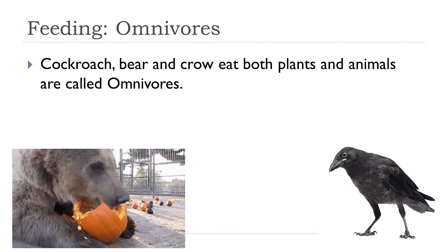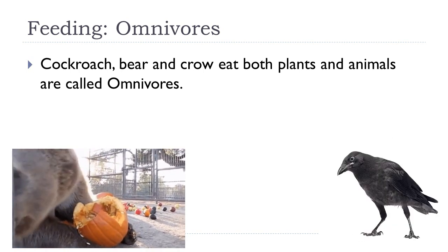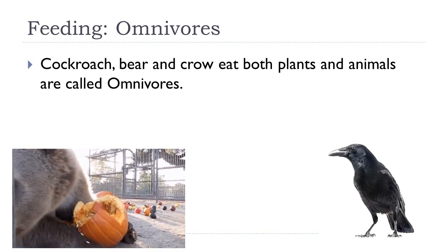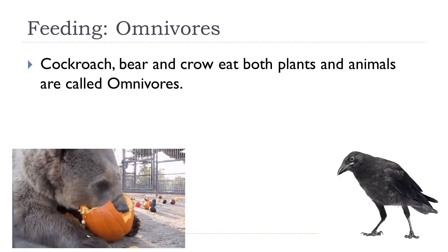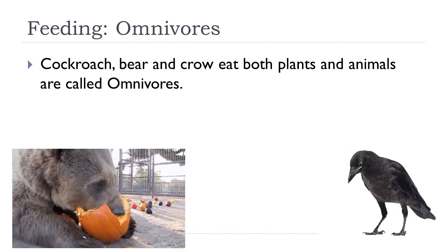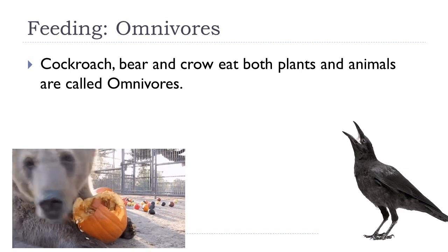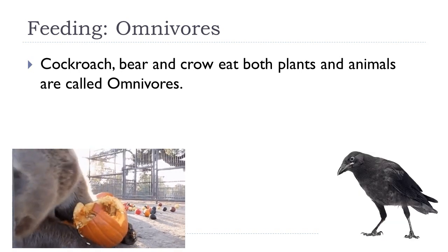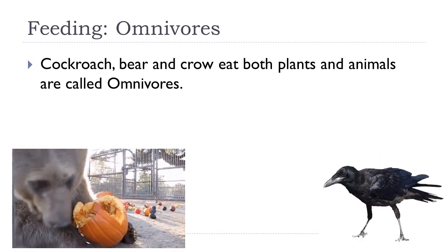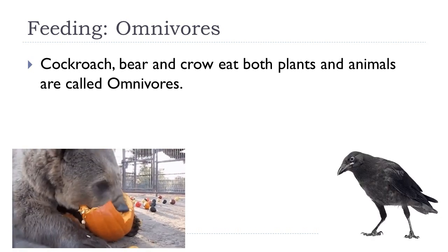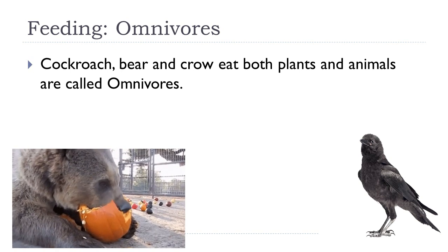Animals such as cockroaches, bears, and crows eat both plants and animals. They are called omnivores. Man is also an omnivore.